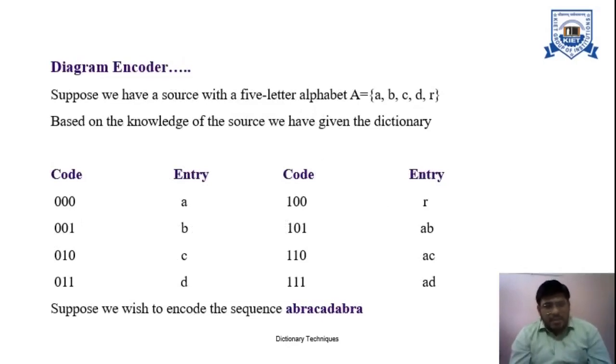Let's take an example where we have a source with a five-letter alphabet A={a, b, c, d, r}. Based on the knowledge of the source we have given the dictionary with codes and entries. We need to encode the sequence abracadabra.